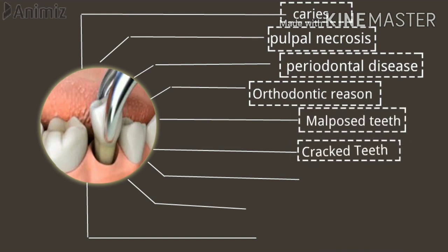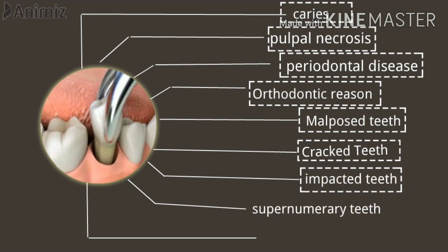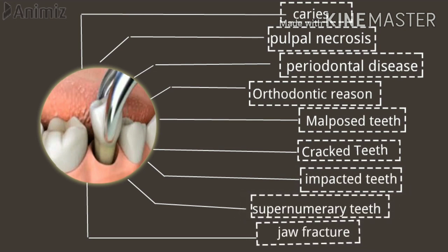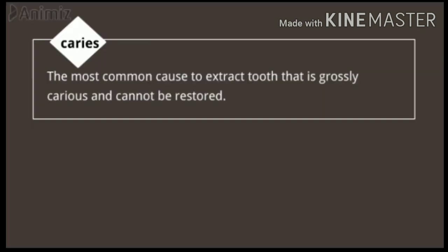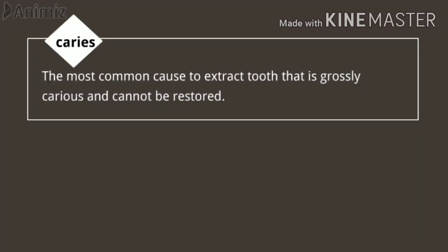Indications of extraction are: caries, pulpal necrosis, periodontal diseases, orthodontic reasons for malposed teeth alignment, cracked teeth which cannot be restored, impacted teeth, supernumerary teeth, and jaw fracture. Caries is basically the most common and widely accepted reason to remove a tooth — when it is so severely carious that it cannot be restored or treated endodontically. For such patients, an implant is a treatment of choice, but if a patient cannot afford the expense of the implant, then extraction is a reasonable choice.